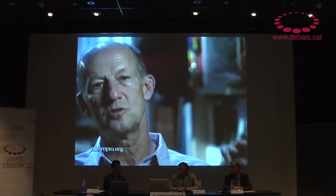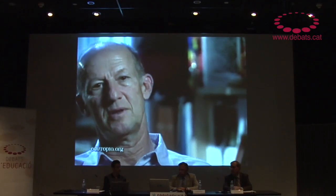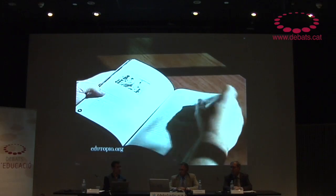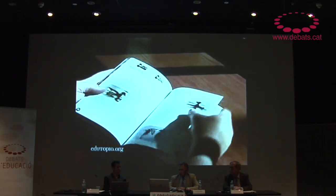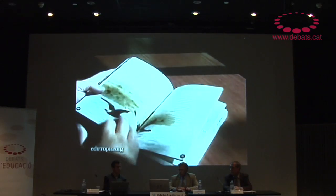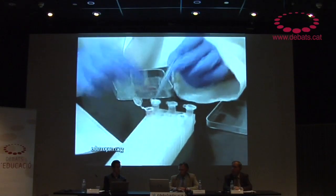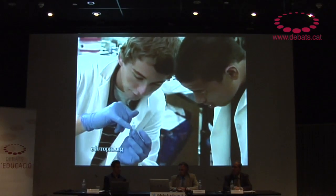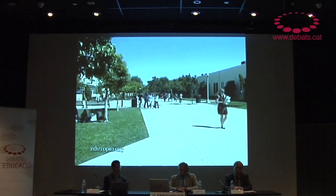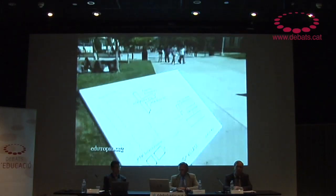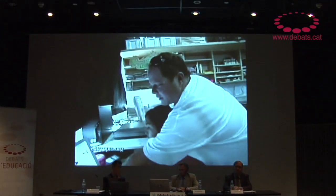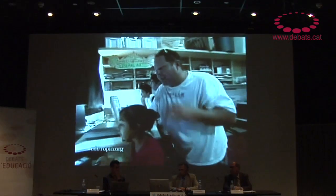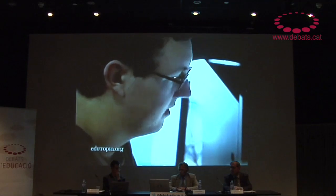As opposed to memorizing 3,000 biology words to prepare for the AP exam, the goal is kids behaving like scientists, photographers, and graphic artists. The high-tech model is working: the original high school has grown into a network of eight public charter schools, and 100% of High Tech High graduates are accepted to college.